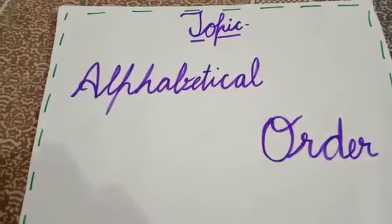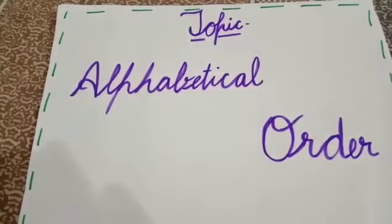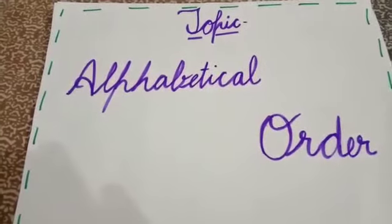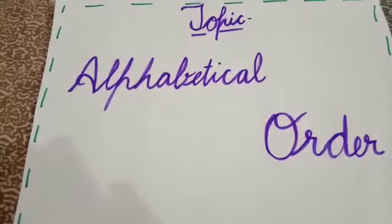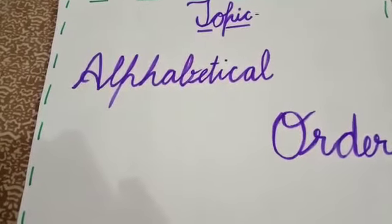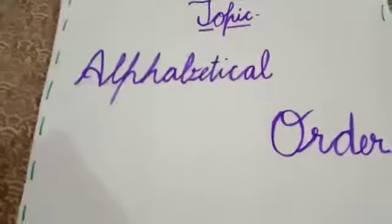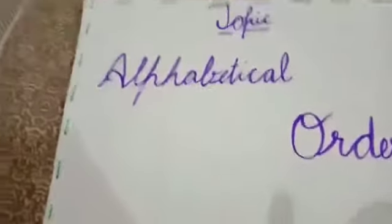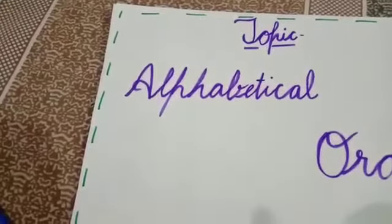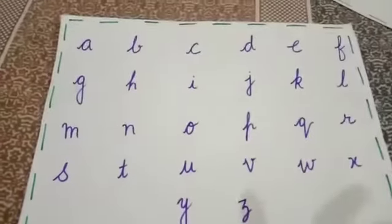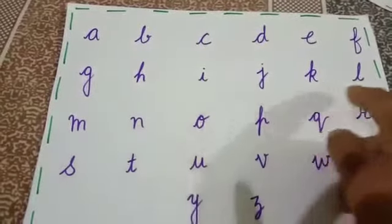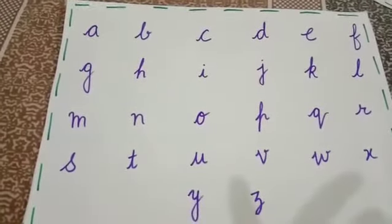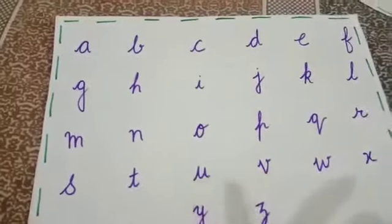Good morning dear students. As you all know, due to coronavirus we are not able to continue our classes, so we are going to teach you with the help of videos. This is the first video in which we are learning to put words in the same order as A, B, C. For this we need to know the order of alphabets very well. Let's have a look at the English alphabets.